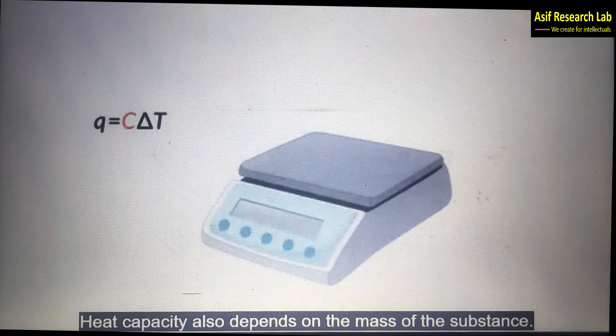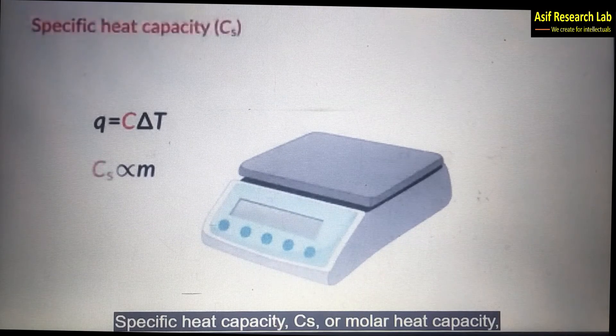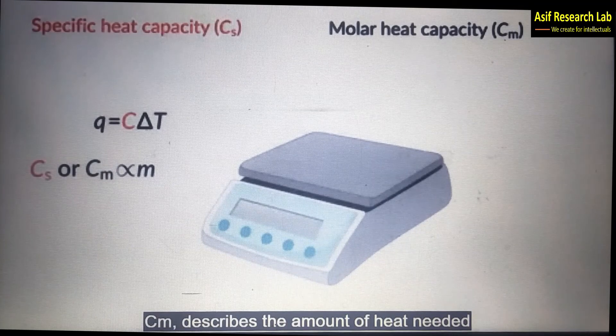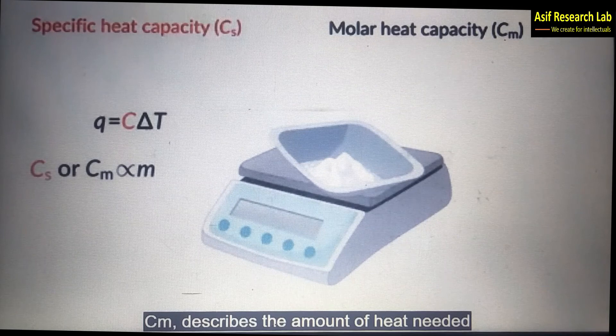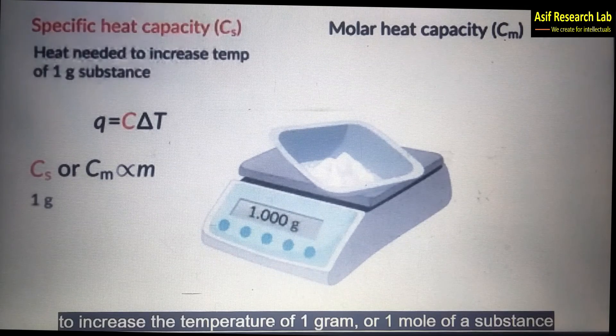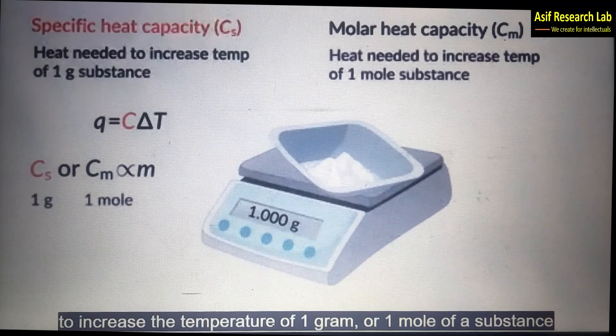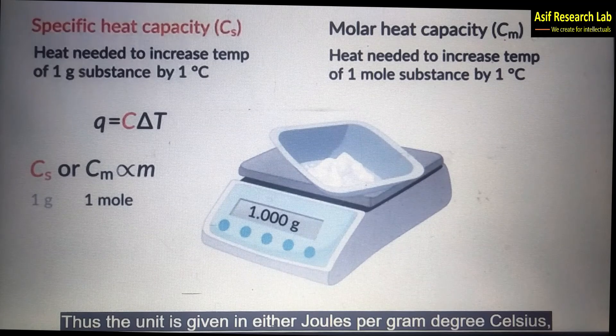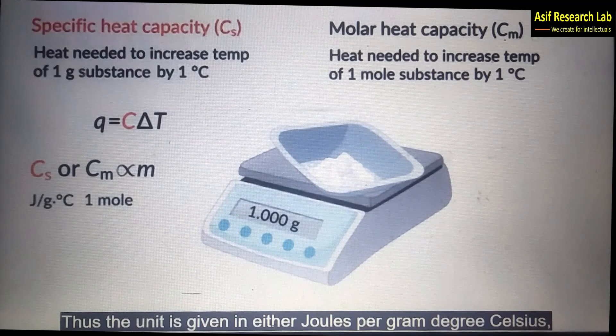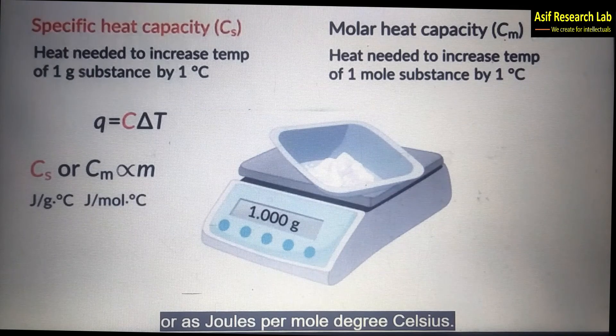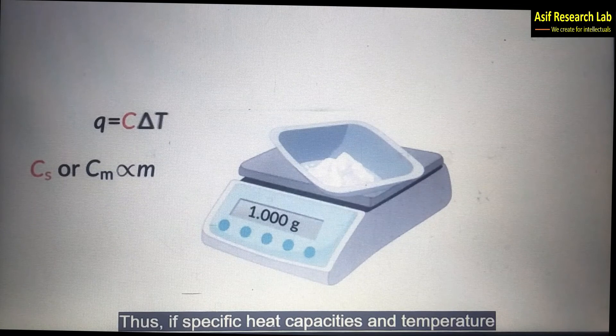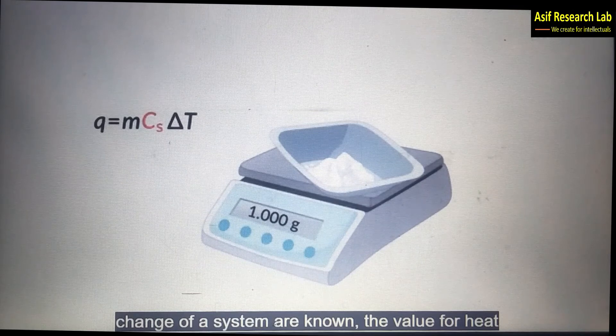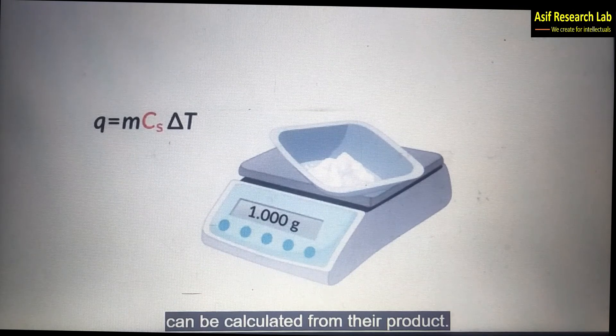Heat capacity also depends on the mass of substances. Specific heat capacity Cs or molar heat capacity Cm describe the amount of heat absorbed to increase the temperature of 1 gram or 1 mole of a substance by 1 degree Celsius. Thus the unit is given either joules per gram degree Celsius or as joules per mole degree Celsius. Thus if specific heat capacities and temperature changes of a system are known the values for heat can be calculated from their product.